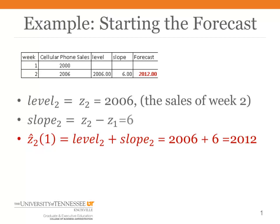And the slope in period 2 is the difference between period 2 and period 1 or 6. So your first forecast that you make in period 2 for one period into the future would be the level plus the slope. And that's the forecast that you would make for period 3.